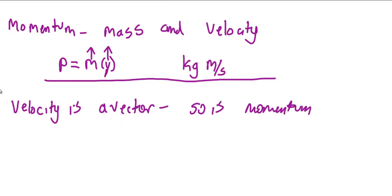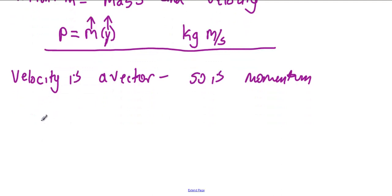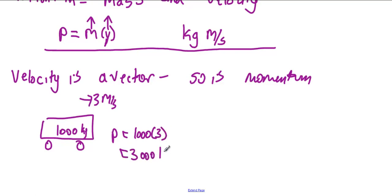And here's what I mean. If we have some object, say some cart, a thousand kilograms, and it's moving to the right at three meters per second, then it has momentum. Its momentum is p equals one thousand times three. And that's three thousand kilogram meters per second to the right. Or positive.